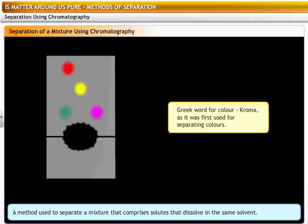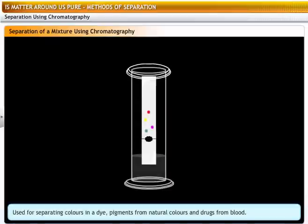The technique we have just seen of using paper to separate the components of ink is referred to as paper chromatography. Chromatography is used for separating colors in a dye, pigments from natural colors and drugs from blood.